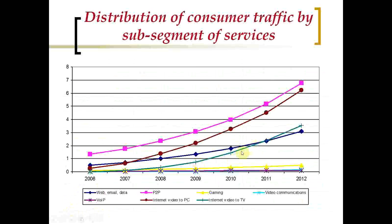The graphical representation of the table from the earlier slide shows that these traffic types are growing. The smallest values are for web and email data, which is rather constant throughout the years, and video communications.